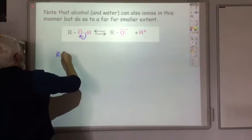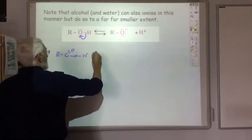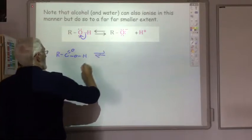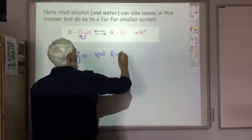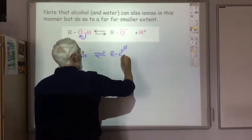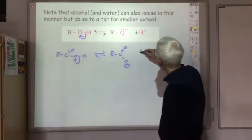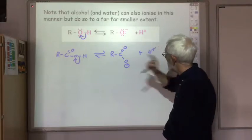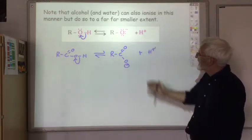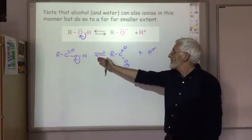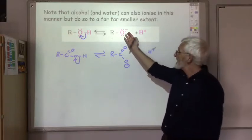So the bond breaks, and we get the carboxylate ion and our H plus. Now, it is an equilibrium, so it is a weak acid, but in this equilibrium, the equilibrium lies a lot farther over to the right-hand side than in this case.